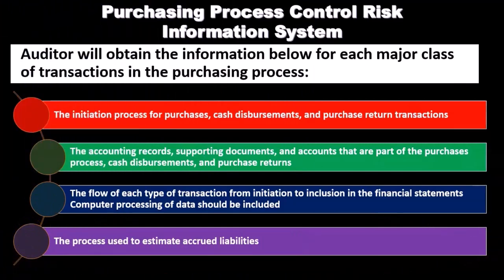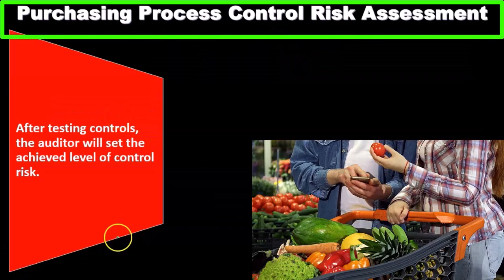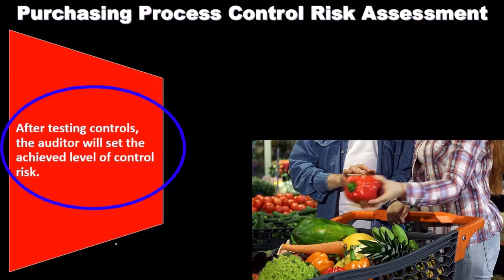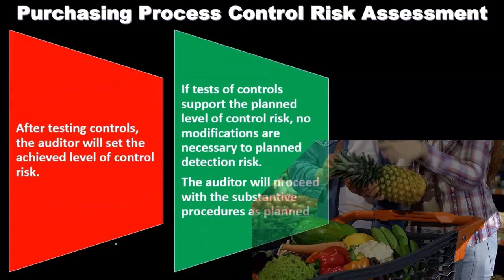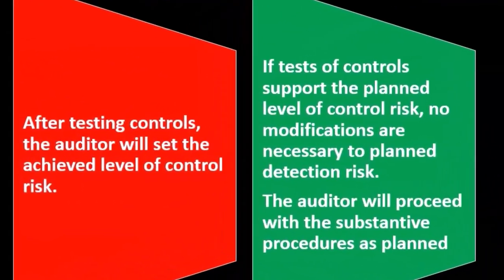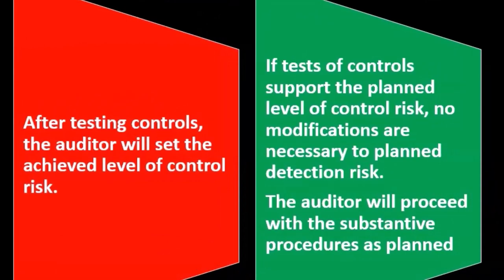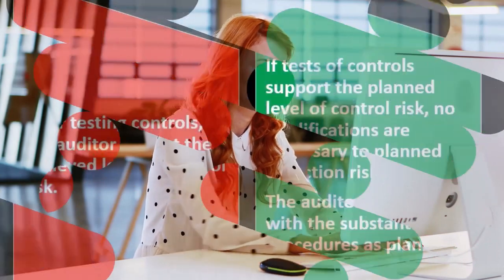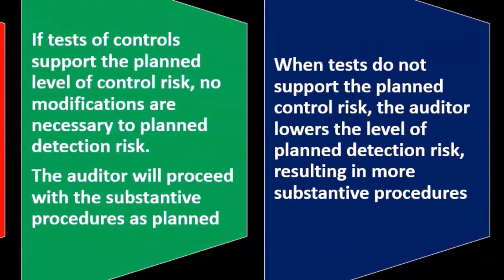This also includes the process used to estimate accrued liabilities. For the purchasing process control risk assessment, after testing controls, the auditor will set the achieved level of control risk. If tests of controls support the planned level of control risk, no modifications are necessary to the planned detection risk, and the auditor will proceed with the substantive procedures as planned.